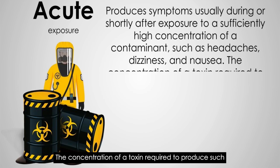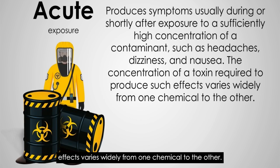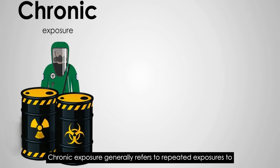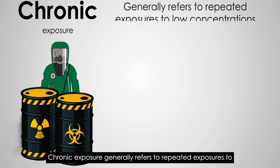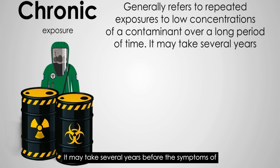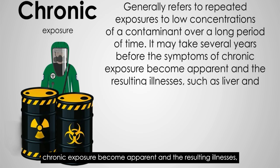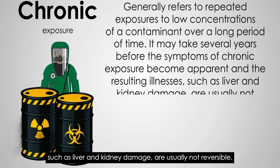The concentration of a toxin required to produce such effects varies widely from one chemical to another. Chronic exposure generally refers to repeated exposures to low concentrations of a contaminant over a long period of time. It may take several years before the symptoms of chronic exposure become apparent, and the resulting illnesses, such as liver and kidney damage, are usually not reversible.